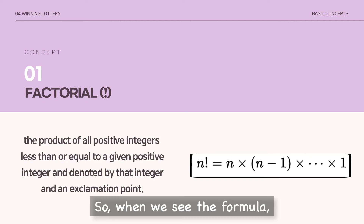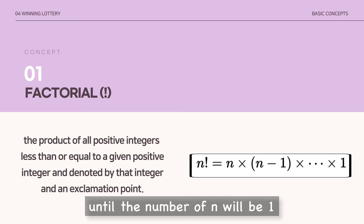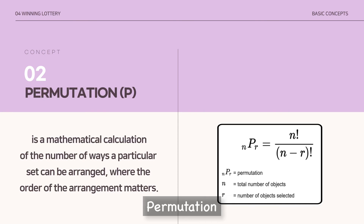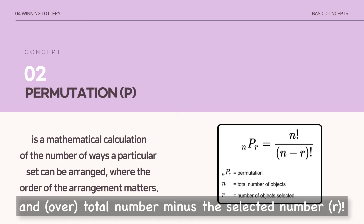When we see the formula, n factorial means n times (n−1) times (n−2) times (n−3) times (n−4), continuing until the number reaches 1. That is the concept of factorial. Number two: permutation. It is a mathematical calculation of the number of ways a particular set can be arranged where the order of the arrangement matters. The formula is n factorial divided by (n minus r) factorial, where n is the total number and r is the selected number.